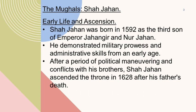Shah Jahan was born in 1592 as the third son of Emperor Jahangir and Nur Jahan. He demonstrated military prowess and administrative skills from an early age. After a period of political manoeuvering and conflicts with his brothers, Shah Jahan ascended the throne in 1628 after his father's death.